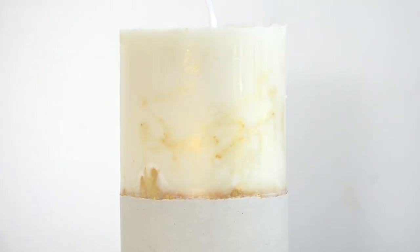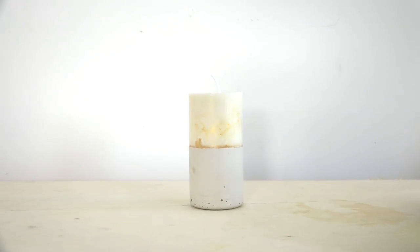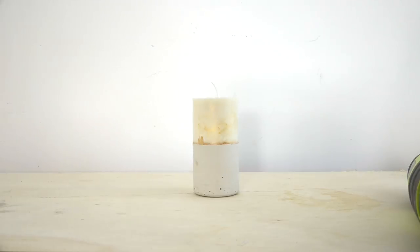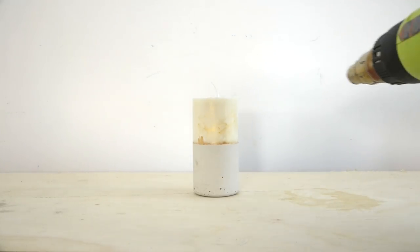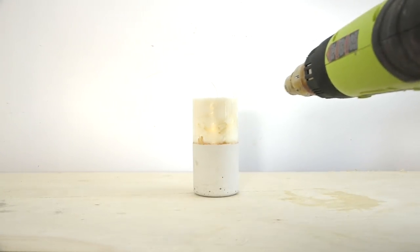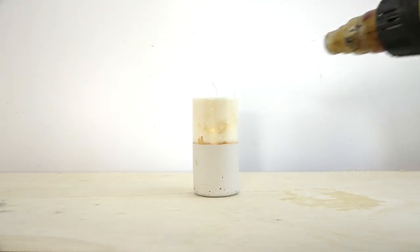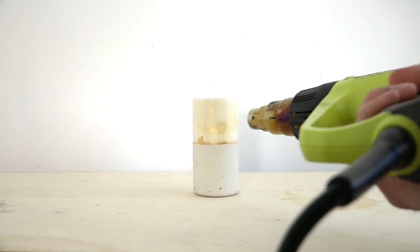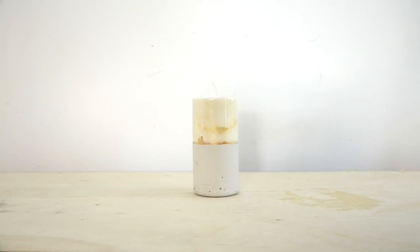Now the candle that I added the gold powder to looks cool but it's a little bit smudged because some of the powder stuck to the sides of the bottle. So I'm going to take a heat gun and just slightly heat up the perimeter of it and it'll start to melt that powder right into the wax and give it a nice cool gold liquid look.